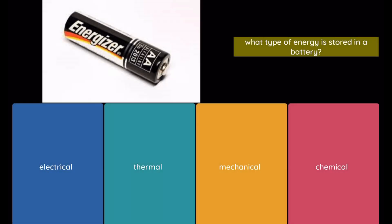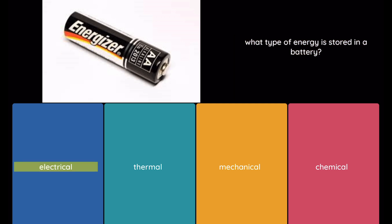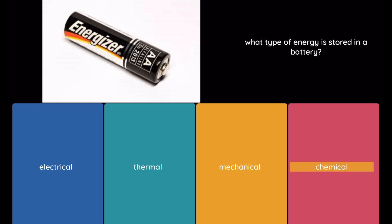Question: What type of energy is stored in a battery? Option 1: electrical. Option 2: thermal. Option 3: mechanical. Option 4: chemical.